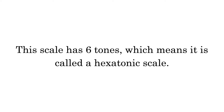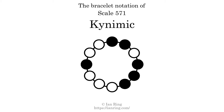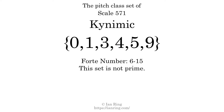This scale has six tones, which means it is called a hexatonic scale. This is a bracelet notation diagram of scale 571. The shaded circles represent tones that appear in the scale, and they are read clockwise, starting at the top. The pitch class set for this scale is 0, 1, 3, 4, 5, 9.